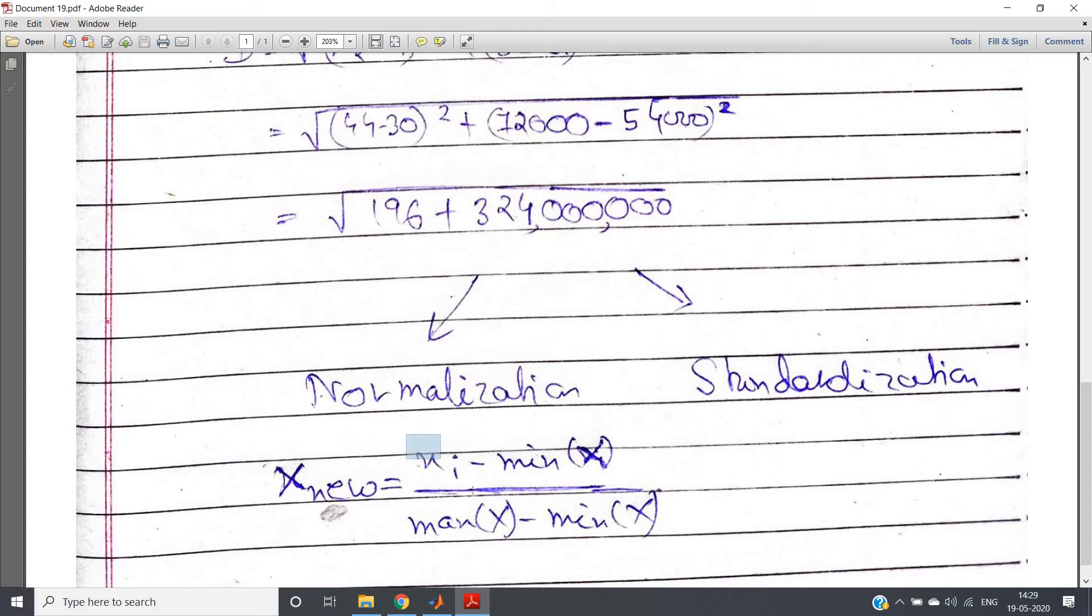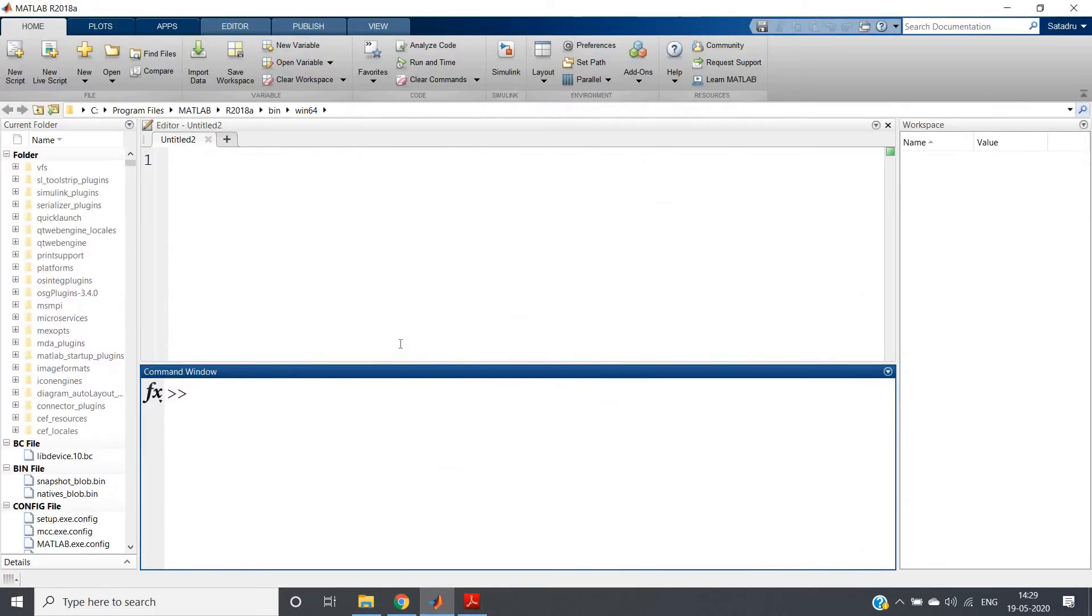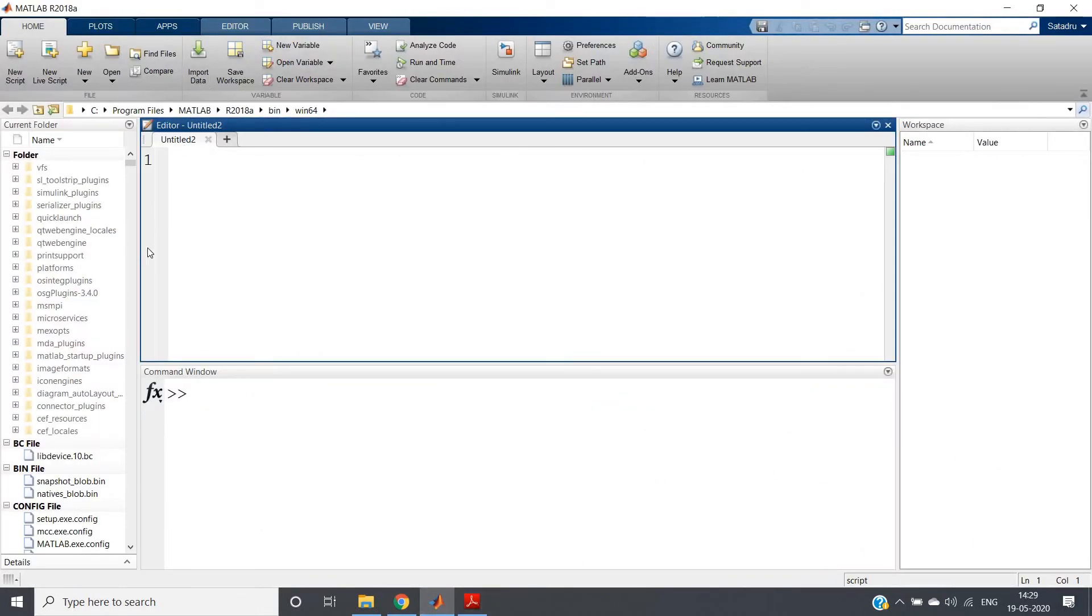When it will be zero? When Xi, that particular data point, is minimum, so minimum minus minimum will become zero. And maximum it can go up to one. So that particular data point will become zero after normalization and maximum within zero and one only it will be happening. So let us directly go to MATLAB and import the data. I am just clicking on import data.